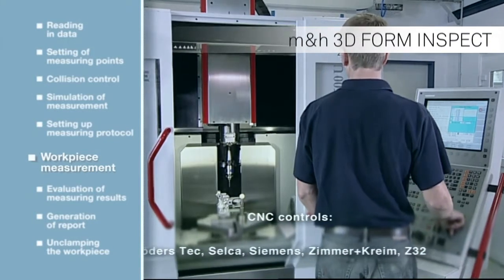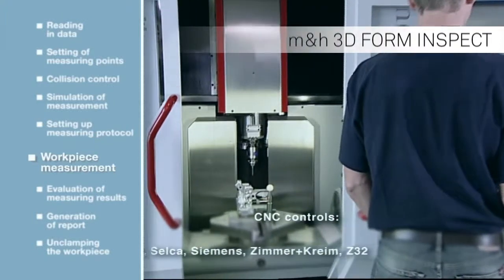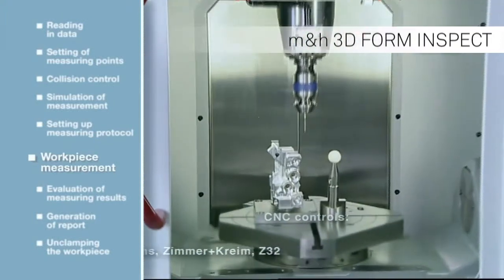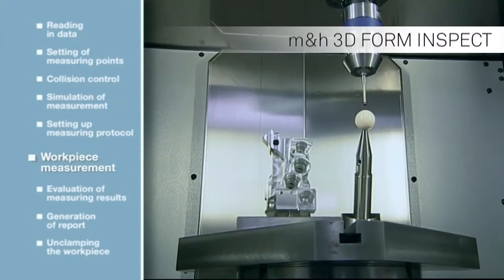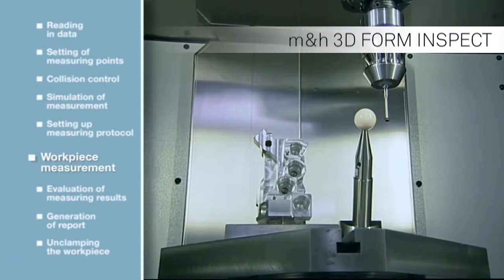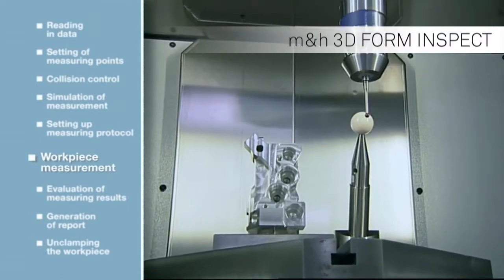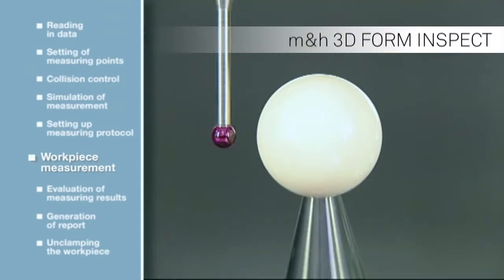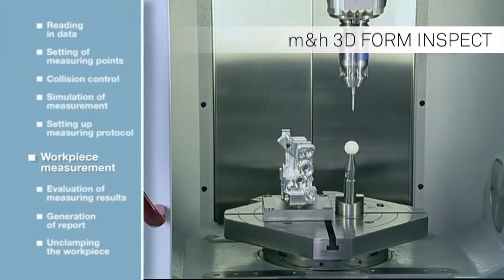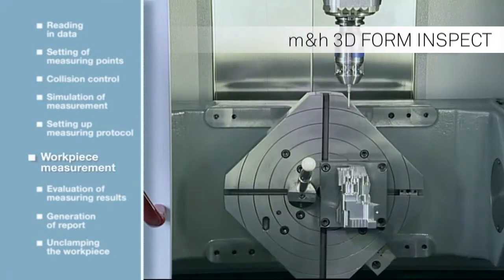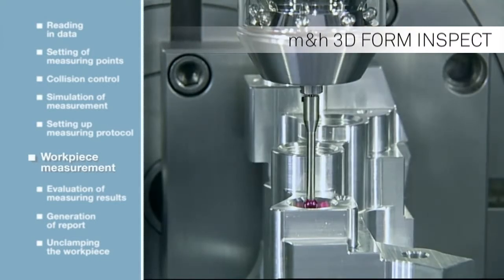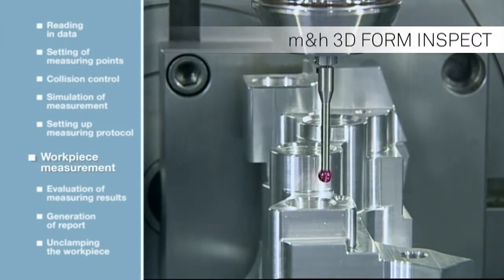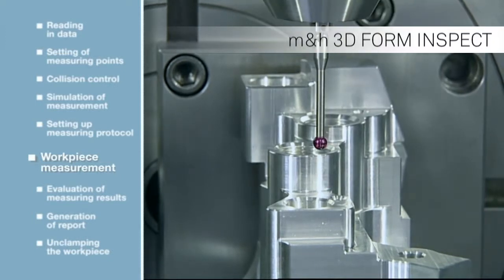The 3D Form Inspect measuring cycle is called up and started. The calibration method used is critical for accuracy and reliability of measuring results. Any faults that may occur in the machining area are compensated during the measuring procedure — even if an inaccurate tool change took place or the machine was influenced by thermal drift or kinematic changes. M&H's sophisticated calibration routine will detect and allow for these faults.